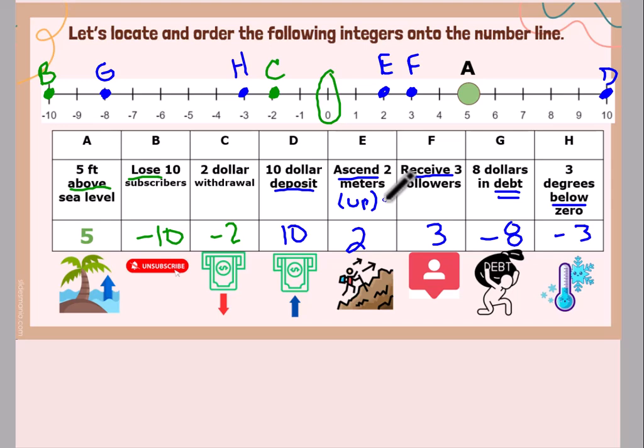F, you receive 3 followers. That means you're getting more followers. You're increasing your number of followers. So it's a positive 3. And I plotted that point F on my number line.